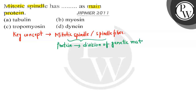When we talk about the cell cycle or cell division, the parent cell divides in order to give rise to two identical daughter cells. Since the parent cell has chromosomes, to produce genetically identical daughter cells, those chromosomes must be equally divided into two parts so that both daughter cells have the same number of chromosomes.